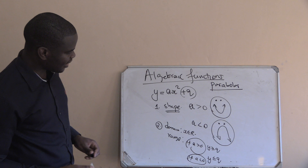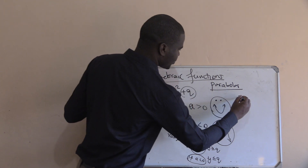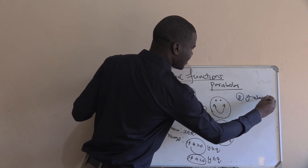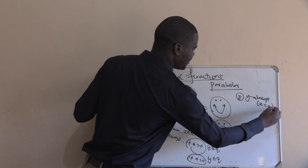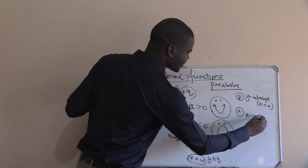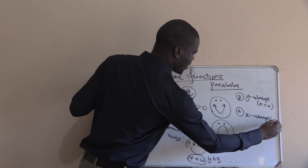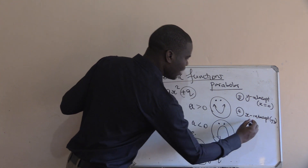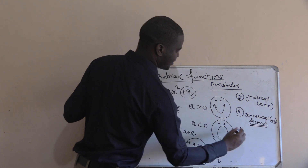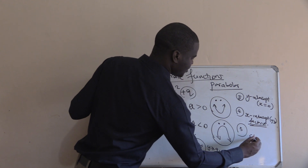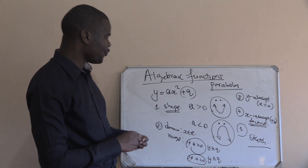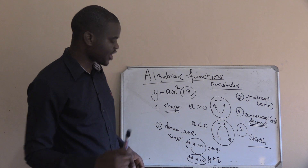When you draw the parabola graph, step three: look for the y-intercept — where there's x, you replace by zero. Step four: look for the x-intercept — where there's y, you replace by zero, then factorize. Step five: sketch the graph. These are the things you need for drawing a parabola graph.